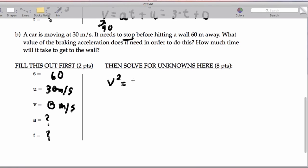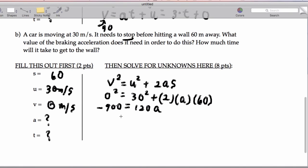We have v squared is u squared plus 2as. That's going to be 0 squared equals 30 squared plus 2 times a times 60. We're going to end up getting when we simplify negative 900 equals 120 times a. That's going to give us an a of negative 7.5 meters per second squared. That makes sense, the car is moving forward and the acceleration is backwards.